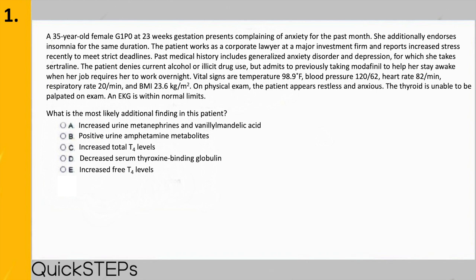However, since there is more thyroxine binding globulin, there may be normal free T4 levels but total T4 levels are increased because there is more T4 bound to the increased TBG in the serum. So choice C is the correct answer. Choices D and E are ruled out since in pregnancy you have increased thyroxine binding globulin and low-to-normal free T4 depending on timing. The hardest part about this question is that you may have thought she was demonstrating signs of hyperthyroidism because she was anxious and had insomnia.